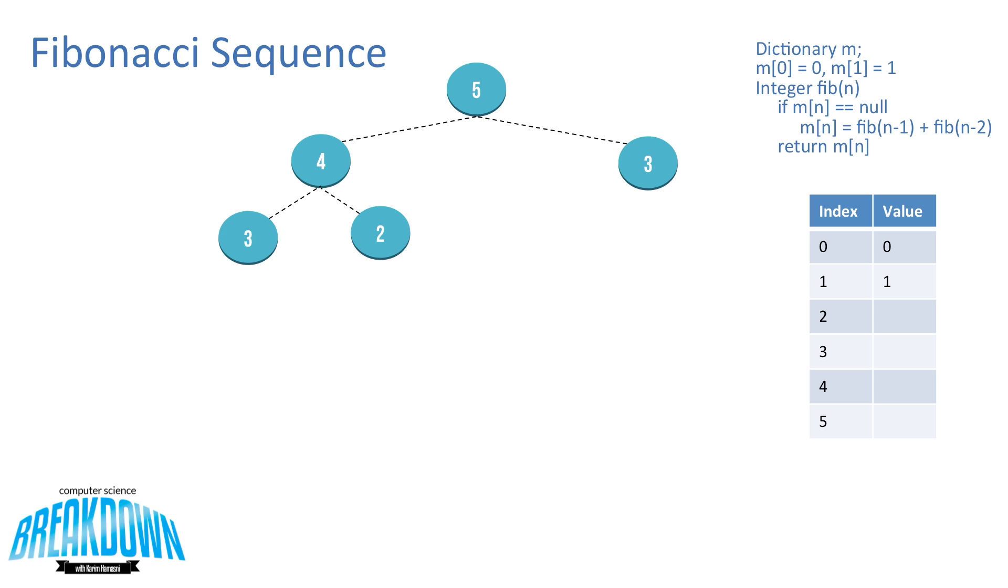Since there's no value at 4, it'll recursively call 3 and 2. Since there's no value at 3, it'll recursively call 2 and 1. Since there's no value at 2, it'll recursively call 1 and 0.